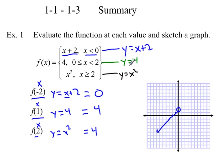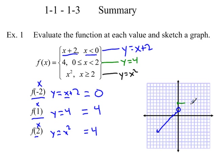Second piece: y equals 4 is a horizontal line at y equals 4. But we only use it for x between 0 and 2, so I erase everything outside that interval. Since x can equal 0, I put a closed circle there; since x cannot equal 2, I put an open circle at x equals 2. That gives us just this short horizontal segment.